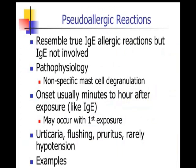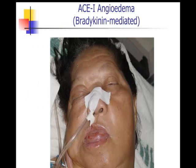A patient undergoing a drug challenge showed a classic urticarial eruption — in this case, not IgE-mediated but a pseudo-allergic reaction from aspirin. Pseudo-allergic reactions resemble IgE-mediated reactions but are IgE-independent, resulting from mast cell degranulation through an IgE-independent fashion. First-dose reactions can occur, and even hypotension can result. Classic examples include vancomycin and opiates. ACE inhibitor angioedema, as shown in a patient with life-threatening airway edema, is bradykinin-mediated and not an IgE-mediated phenomenon.